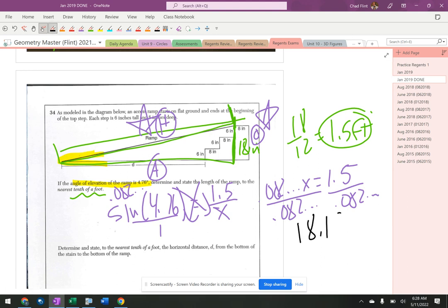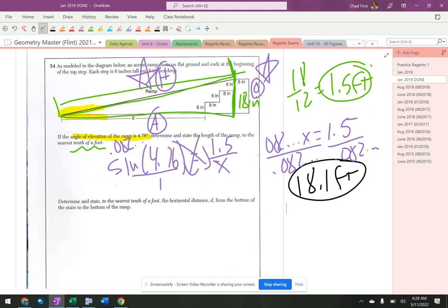Okay, determine and state to the nearest tenth of a foot the horizontal distance from the bottom of the stairs to the bottom of the ramp. Alright, so we're gonna have to do this in two pieces here because we don't want to try to figure it out a more complicated way. So we'll find that, but that's not gonna be the correct distance. Got to take out the steps. Let's just find that first.